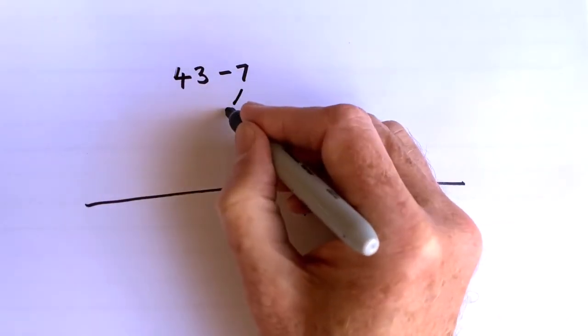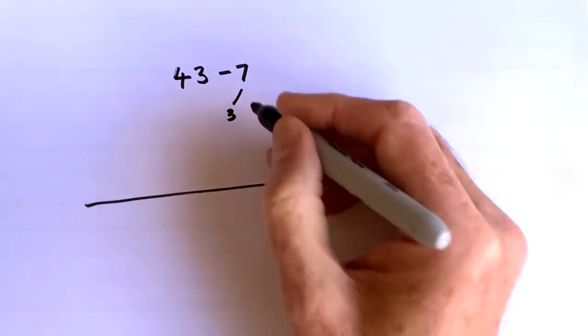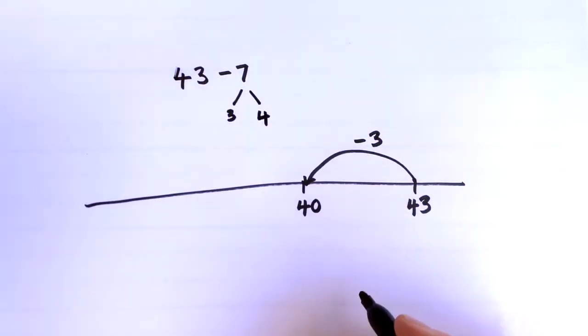So I've already used up 3 of the 7 that I want to subtract, so I'm partitioning my 7 into 3 and 4.